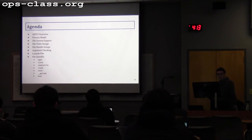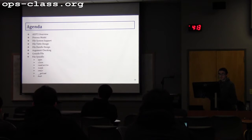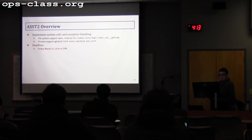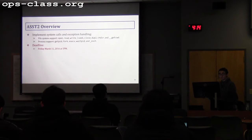Today we have a lot to cover. We're going to cover the file system support part today, and process support will be next week. Topics include the process model, file system support, file table design, file handle design, argument checking, and the console file, followed by the syscalls you need to implement. We always recommend students start with the file system calls because they are easier to implement, and also because the process syscalls have some dependencies on the file syscalls. The deadline is one and a half weeks from today.